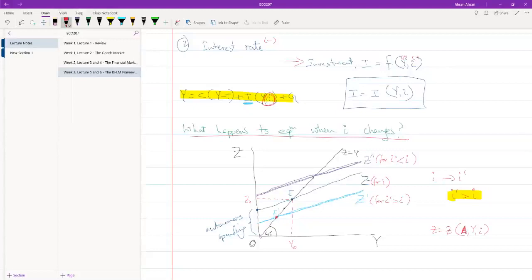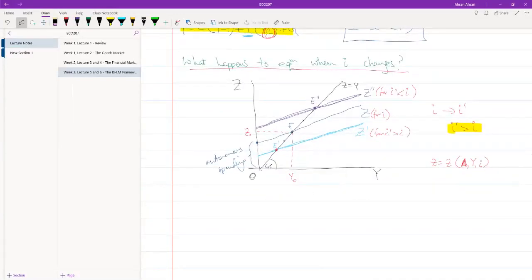So to sum up, what have we seen here? We see that when we introduce interest rate into our goods market, it has an inverse relationship with investment. As a result, when interest rate goes up, investment falls, demand falls, and as a result the output also falls. This is Y prime. Conversely, when interest rate falls, investment goes up, demand goes up, and as a result output also goes up.